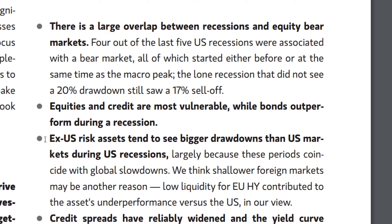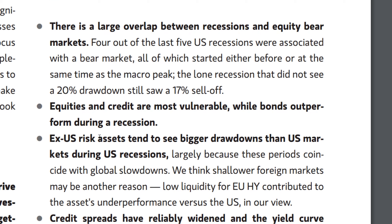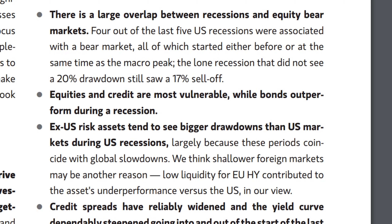Another data point that will surprise many people: ex-U.S. risk assets tend to see bigger drawdowns than U.S. markets during U.S. recessions. That means foreign assets like Europe, Canada, and emerging markets see bigger drawdowns during a U.S. recession than U.S. assets do. A lot of people look at Europe and Canada as safe havens during a U.S. recession — but with how global the economy is, the U.S. is a giant consumer. When the consumer stops buying here, it sends us into recession and doesn't help Europe or Canada either — their markets will likely fall even further than the U.S.